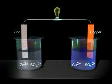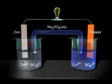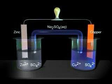No current flows through the light bulb because the electrical circuit is not complete. To complete the electrical circuit, we add a tubular bridge filled with aqueous sodium sulfate solution with a porous plug on each end. We now have a complete circuit and current flows.